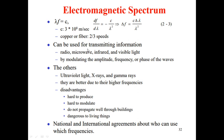First we are going to learn about how frequency can be used for transmitting information — how radio waves, microwaves, infrared waves, and invisible light are used to transmit information. This is done by modulating the amplitude, frequency, or phase of the waves. Using all these three methods, transmission takes place.